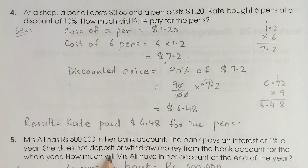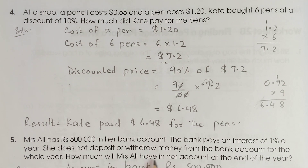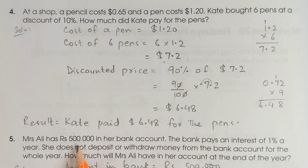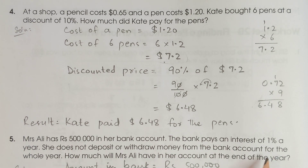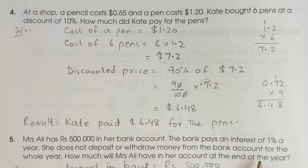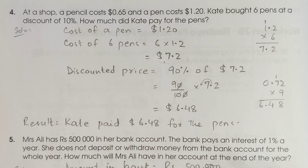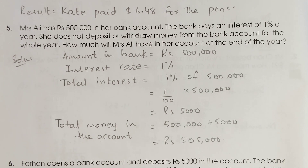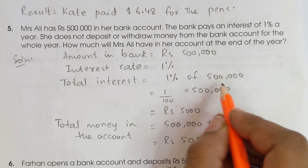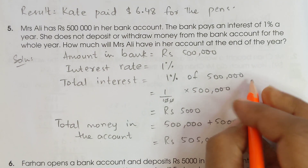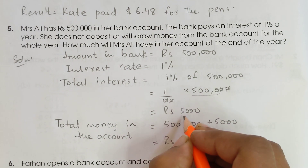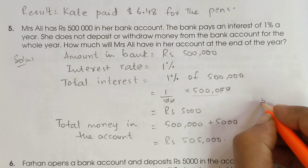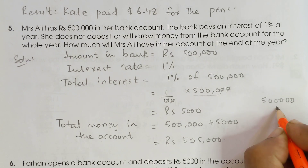How much will Mrs. Ali have in her account at the end of the year? She starts with 5 lakh rupees. We calculate 1% of 500,000: that is 1 upon 100 multiplied by 500,000. The zeros cancel and we get 5,000. So 5 lakh plus 5,000 interest gives the total amount in the bank.